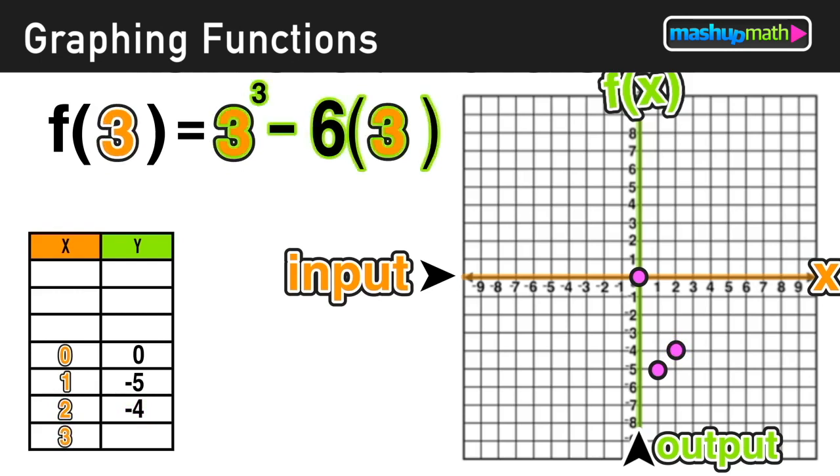And when we input 3, we can see that 3³ - 6 times 3 evaluates to 9. So when we input 3, our output is 9, and the point (3, 9) is yet another point on the graph of our function.